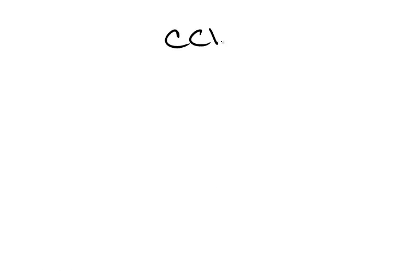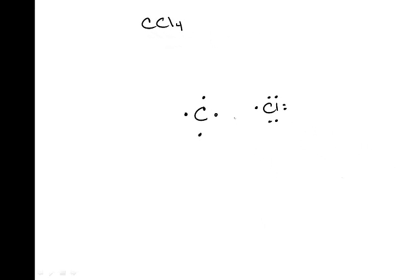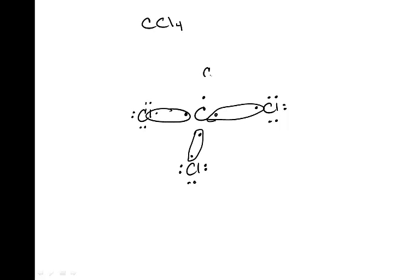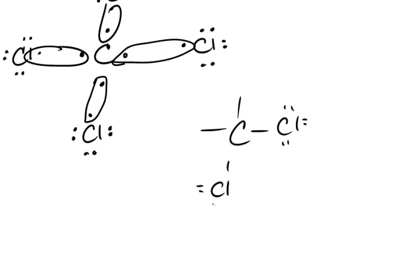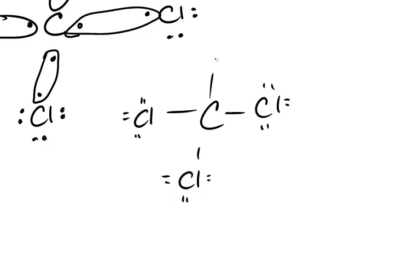Now let's take a look at carbon tetrachloride. Carbon has four valence electrons, and chlorine has seven. Carbon can share this valence electron with each chlorine atom — there are four chlorine atoms. Carbon will share here, carbon will share here, and carbon can share here. So now we have carbon with four bonds to four chlorine atoms, each chlorine with its remaining valence electrons.